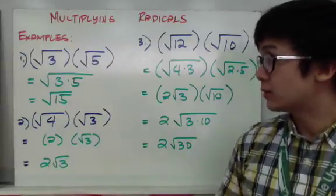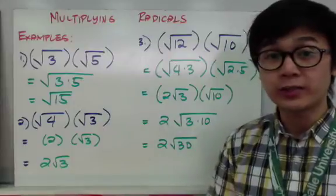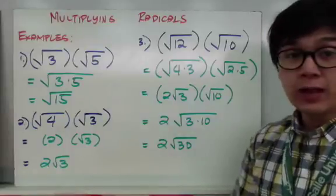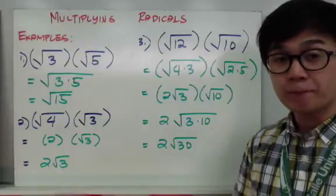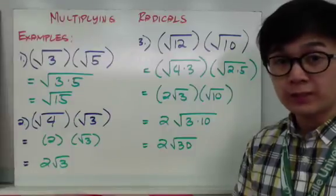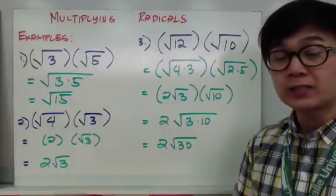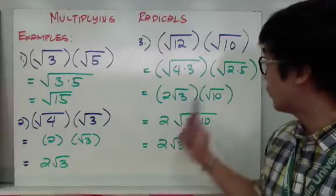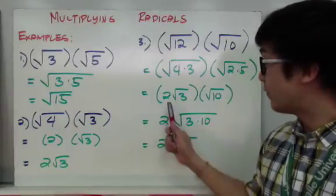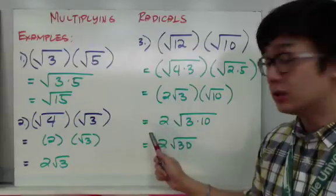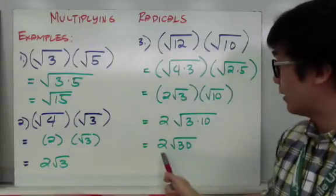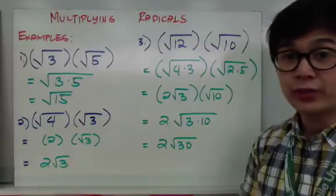For example 3, square root of 12 times square root of 10: square root of 12 simplifies to 2 square root of 3, and square root of 10 cannot be simplified further. Multiplying the radicands 3 and 10 gives 30, while the real number 2 stays outside, so the simplest form is 2 square root of 30.